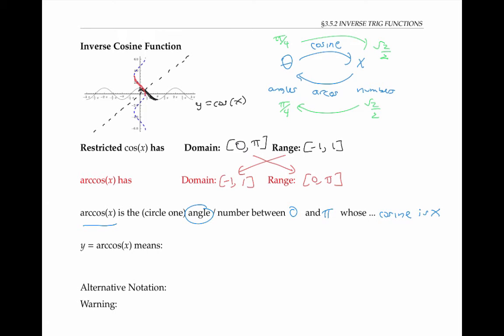In other words, y equals arc cosine of x means that x is equal to cosine of y. And y is between zero and pi, since otherwise there'd be lots of possible answers for an angle y whose cosine is x.